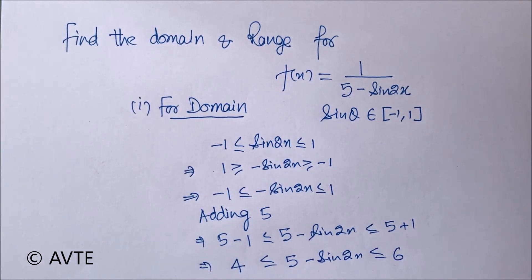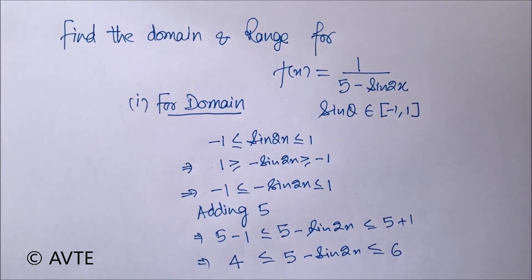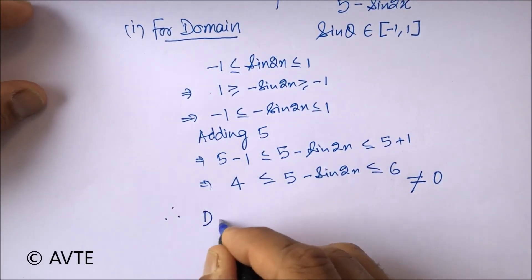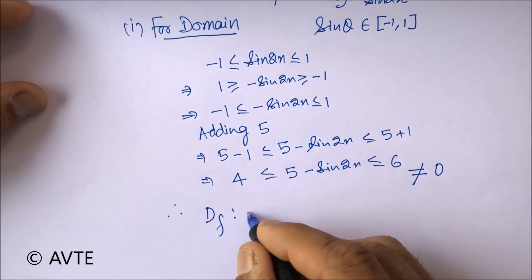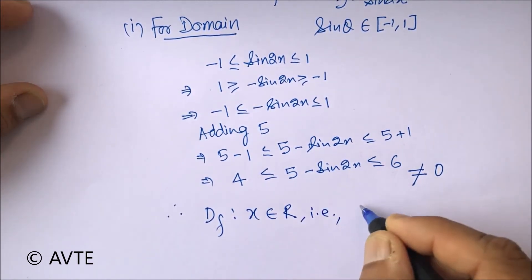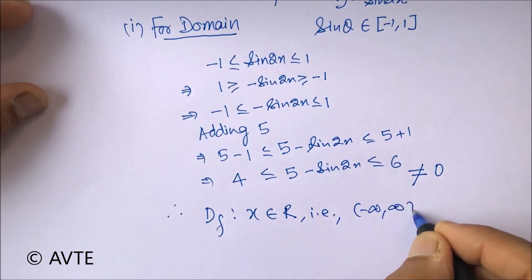You can see that the expression is ranging from four to six and it is never equal to zero. Therefore, since the denominator cannot be zero, the domain is x belonging to R, that is minus infinity to infinity.